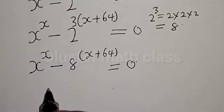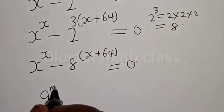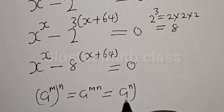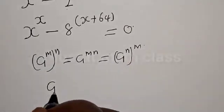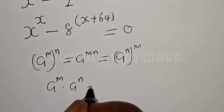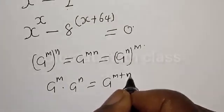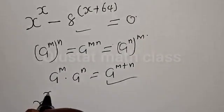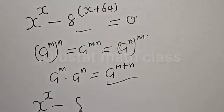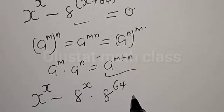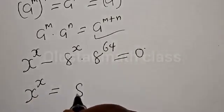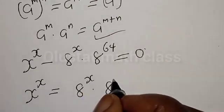Now remember, if you have a raised to power m raised to power n, that is the same as a raised to power n raised to power m. Also, if you have a raised to power m multiplied by a raised to power n, that is the same as a raised to power m plus n. We are going to make use of this here. So s raised to power x is equal to a raised to power x multiplied by a raised to power 64 is equal to 0.